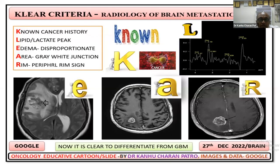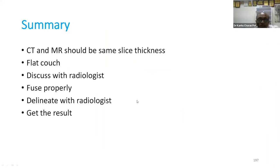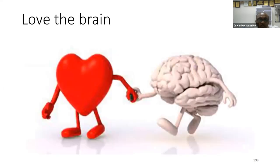In summary: CT and MRI should have the same thickness, flat curves; discuss with the radiologist, fuse images properly, delineate with the radiologist, and get the result. Thank you.